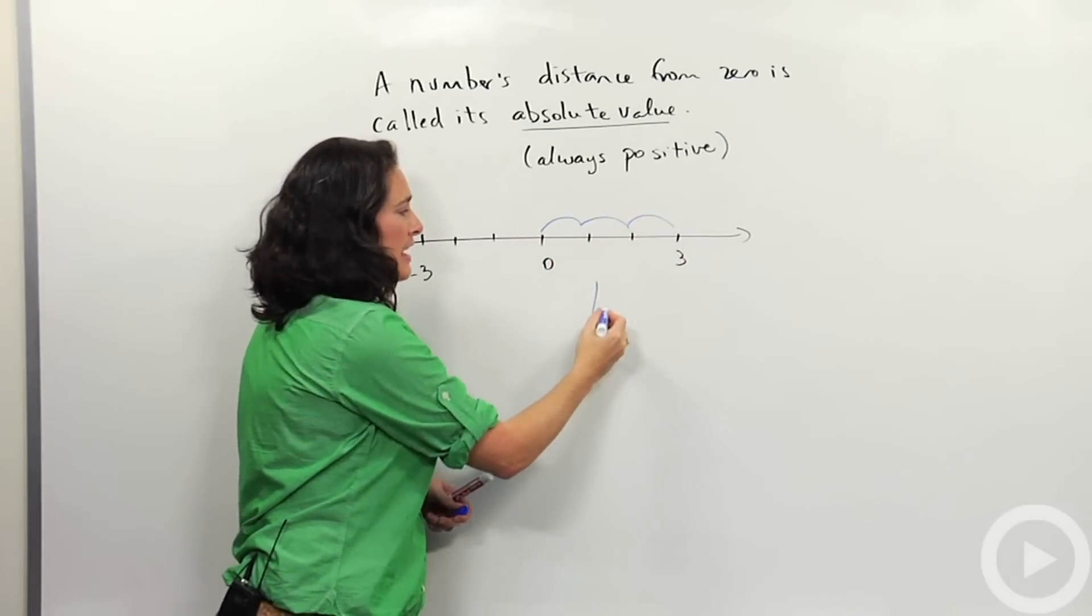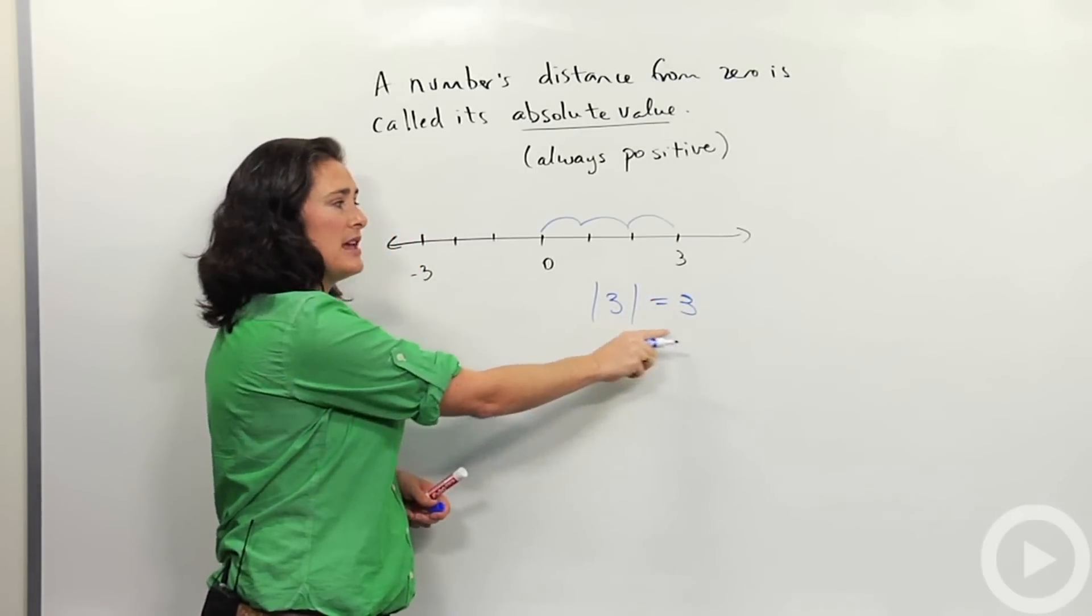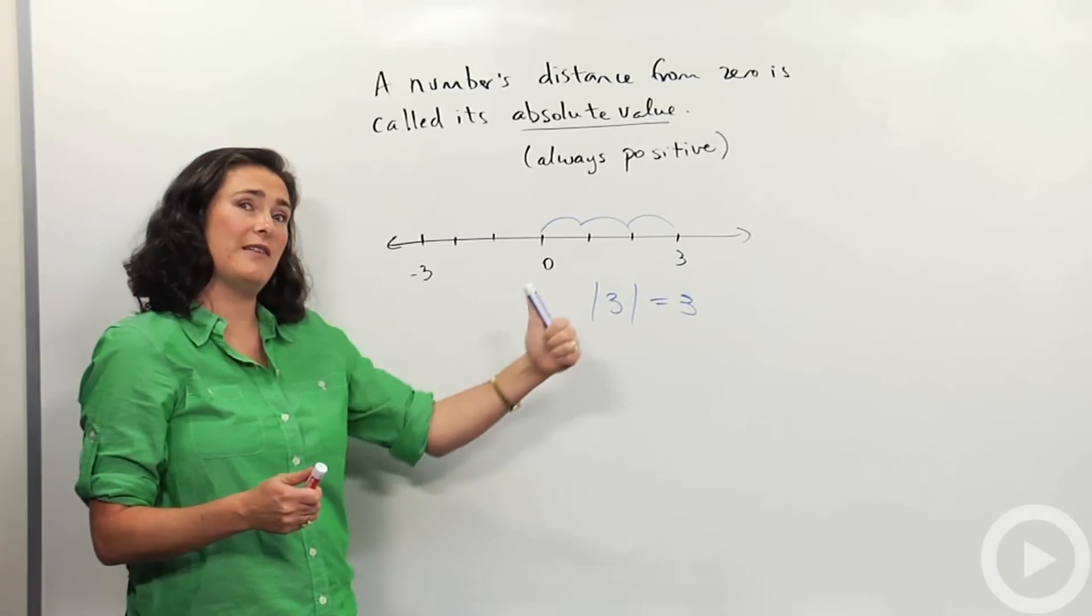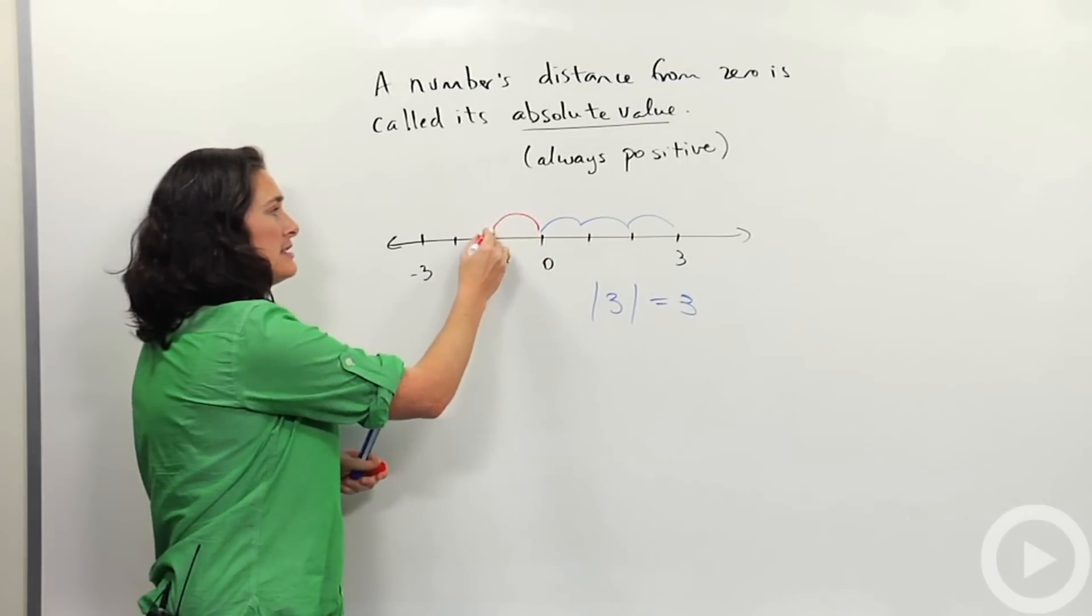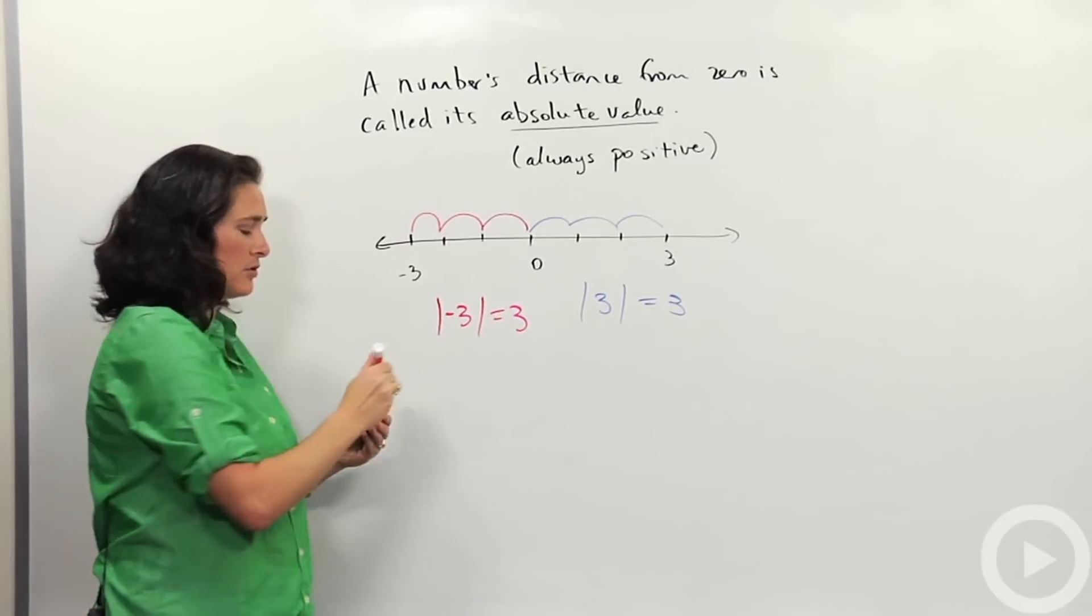So the way I notate that with absolute value is like this. Absolute value of three is equal to three units. But from zero I could also travel to the left. I could also go in the other direction. Still three units. So my absolute value of negative three is also equal to three.